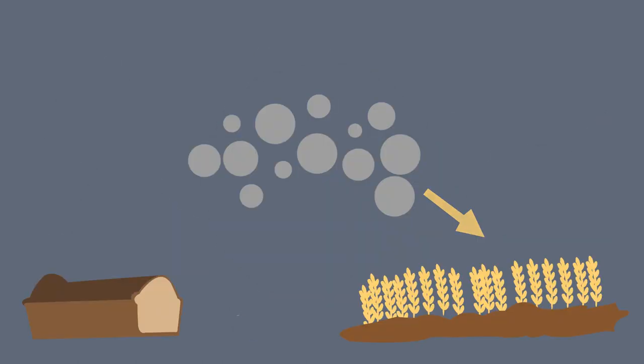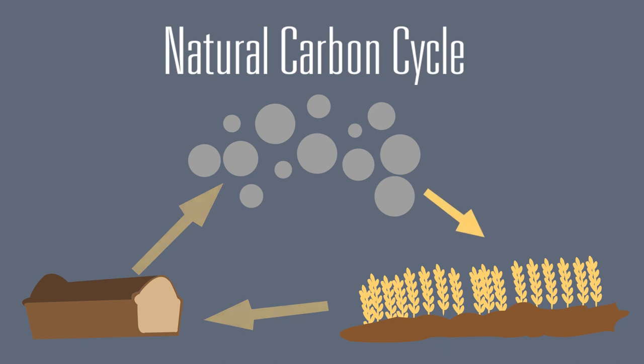The answer is that this carbon dioxide is part of the natural carbon cycle. It came from your food, say bread, which got its carbon from the atmosphere when it was growing as a wheat plant.